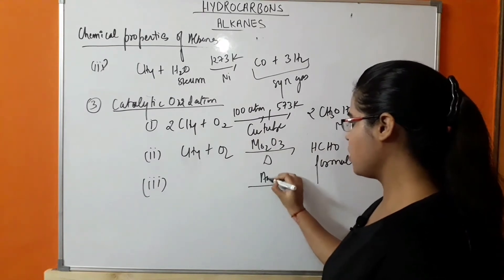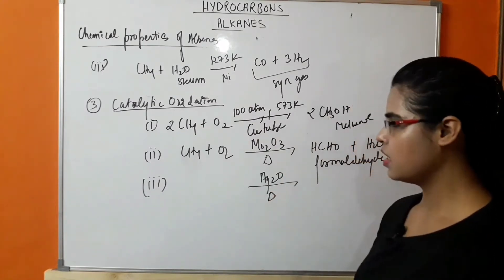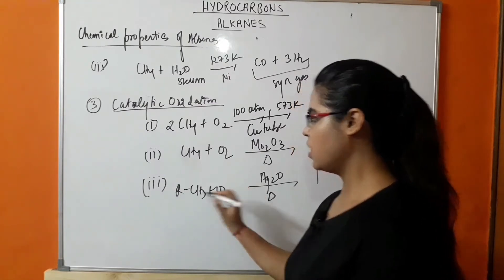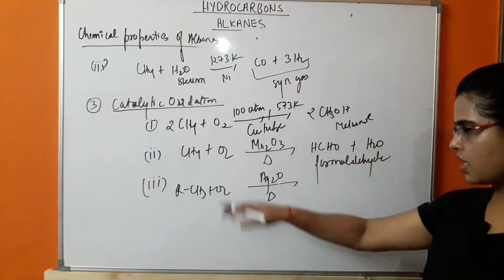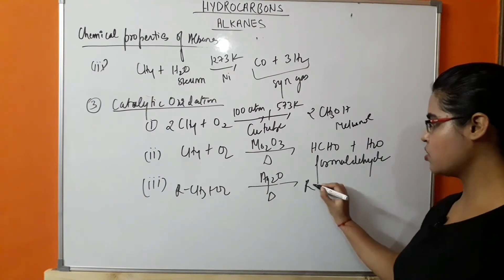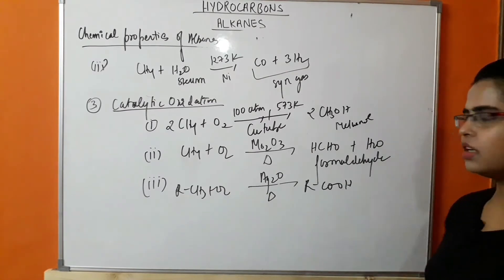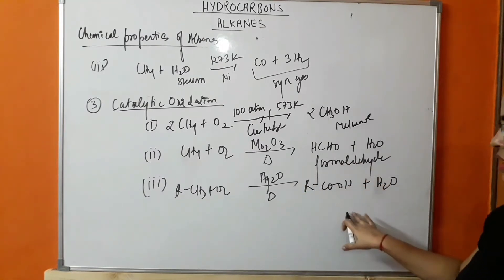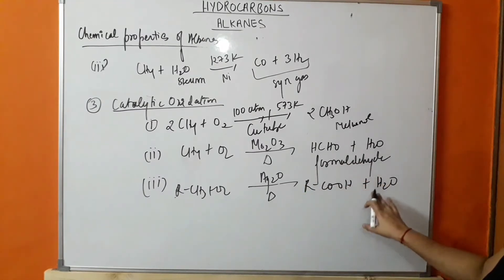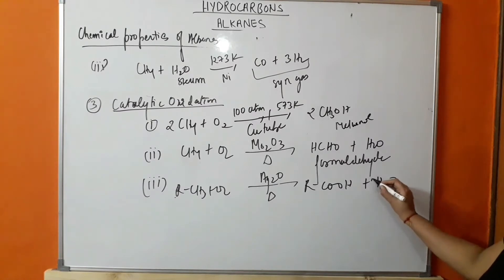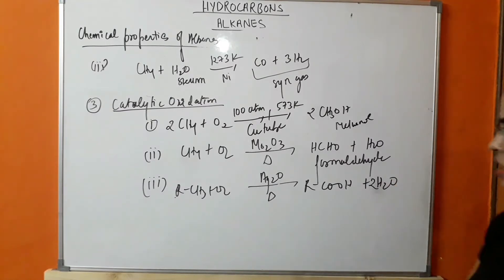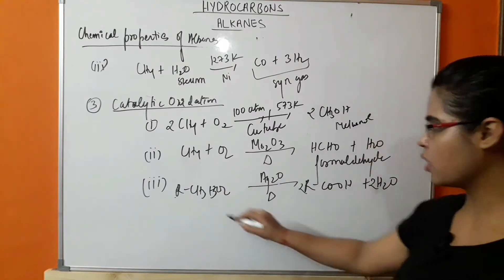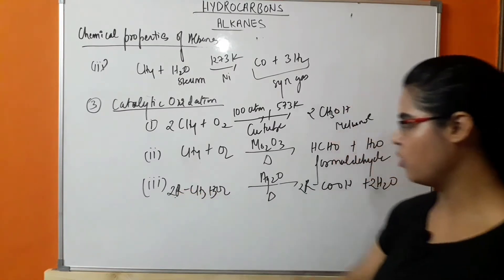Third example of catalytic oxidation: when the catalyst is silver oxide and a higher hydrocarbon is taken, there will be formation of an acid along with removal of H2O. You have to balance the reaction — in this case, two molecules of H2O will be released and the oxygen will be three.